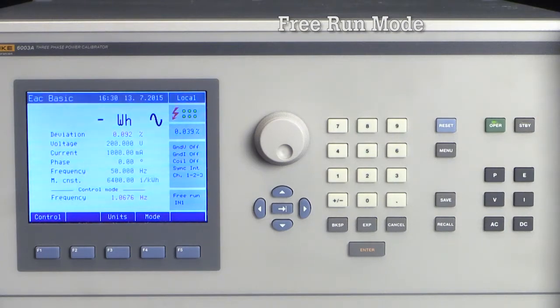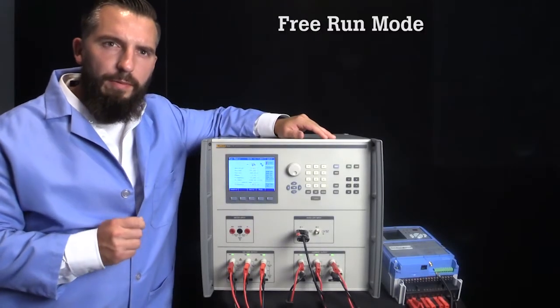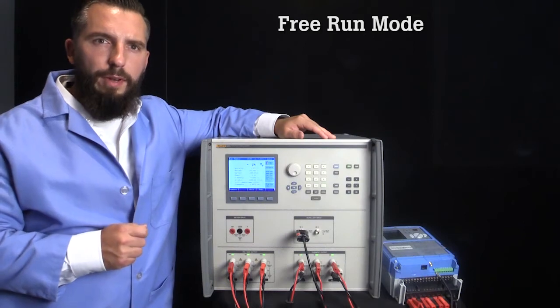The 6003A continuously shows the deviation between the measured frequency and expected frequency as a percentage. The meter we are testing is a three-phase class 0.2 energy meter and, based on this measurement, the meter is well within that specification window. This mode is useful for troubleshooting setups and is not recommended for the most accurate and repeatable energy calibrations.